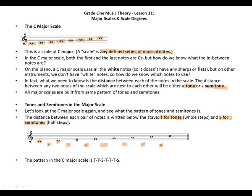The pattern in the C major scale is tone, tone, semitone, tone, tone, tone, semitone. So we have two first tones, then we have a semitone, then we have three tones, then one semitone. That's the pattern for a major scale.